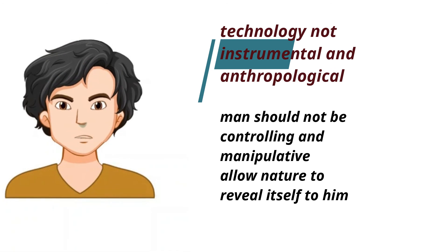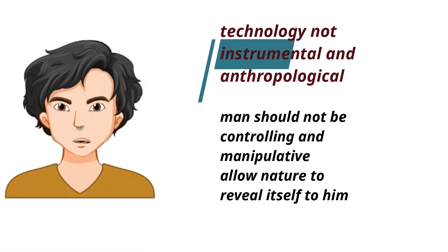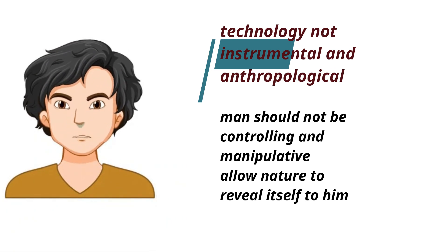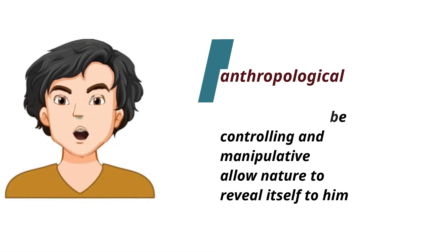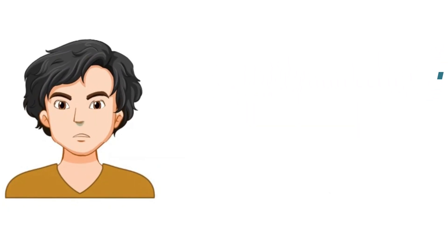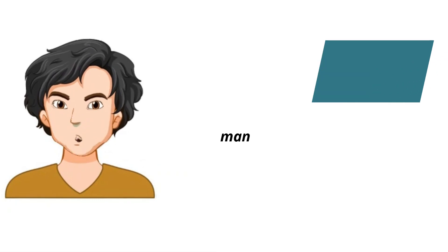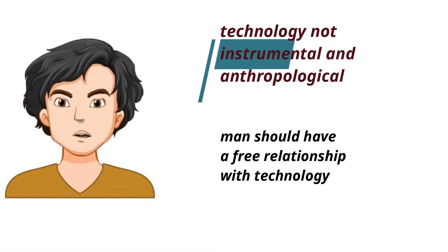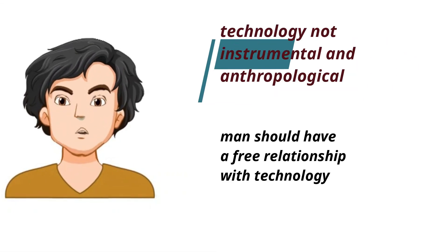For Heidegger, the solution for this is that man should not be controlling and manipulative of what he was set upon, but to also allow nature to reveal itself to him. With this, according to Heidegger, man will have a free relationship with technology.